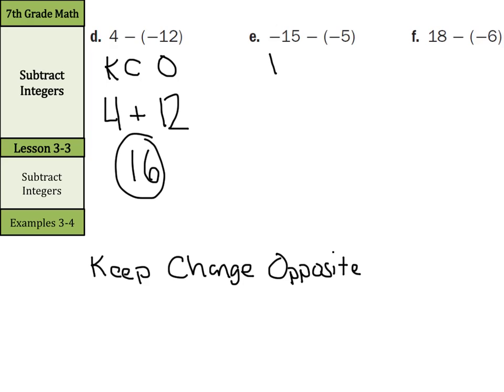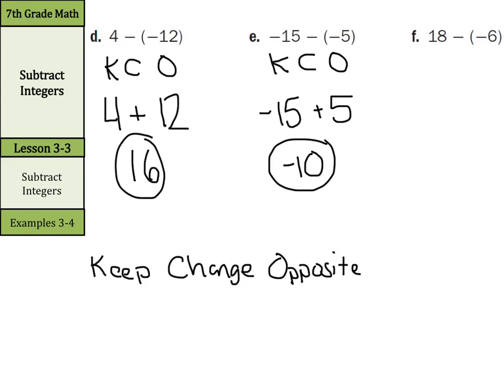Negative 15 minus negative 5: keep the negative 15, add, and the opposite of negative 5 is positive 5. With one negative and one positive — different signs — subtract: 15 minus 5 is 10. Negative 15 has the higher absolute value, so the answer is negative 10.